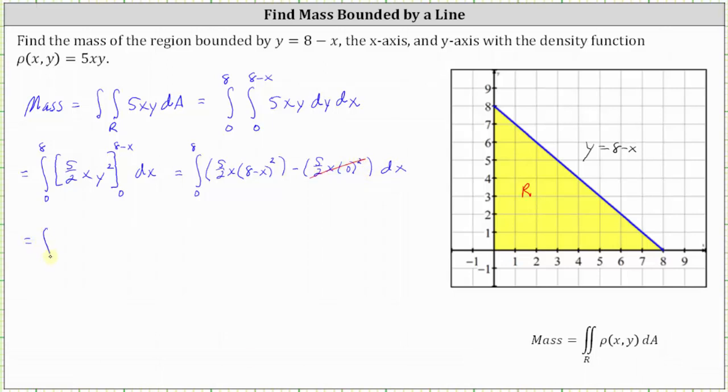So this is equal to the integral from 0 to 8 of (5/2)x times the square of (8-x), which is going to be 64 minus 16x plus x squared. You may want to verify this. Let's go ahead and distribute the (5/2)x. (5/2)x times 64 is equal to 160x minus (5/2)x times 16x is equal to 40x squared. Finally, we have (5/2)x times x squared, which gives us plus (5/2)x cubed.